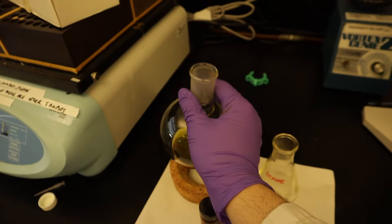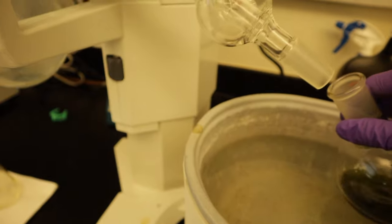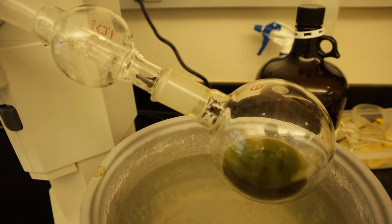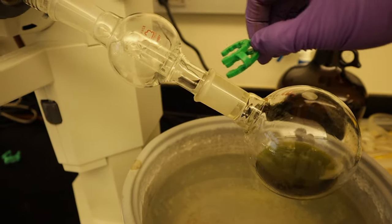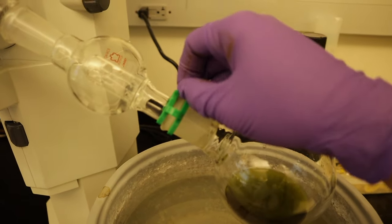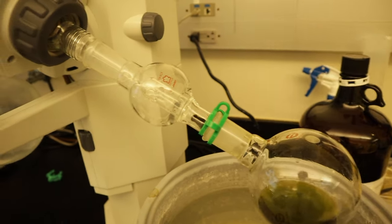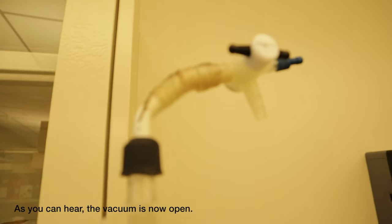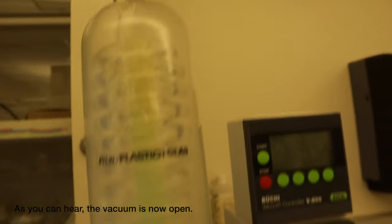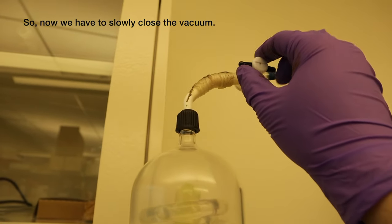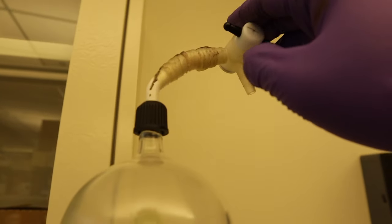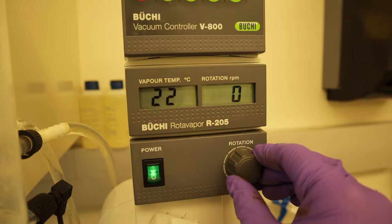We'll be putting this round flask here and we will lock it using this one so it will not fall off. The next step is to turn on the vacuum. Then, turn on the heating bath.